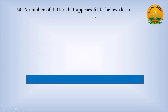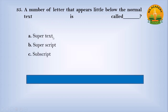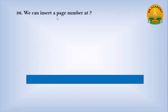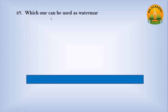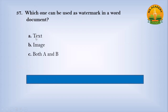A letter that appears slightly below the normal text is called — option A: supertext, option B: superscript, option C: subscript. Answer: C — subscript. We can insert a page number at — option A: header, option B: footer, option C: both A and B. Answer: C — both header and footer. Which one can be used as a watermark in a Word document? Option A: text, option B: image, option C: both A and B. Answer: C — both A and B.